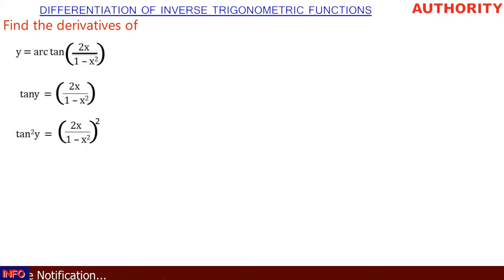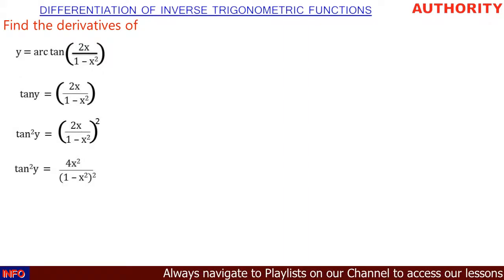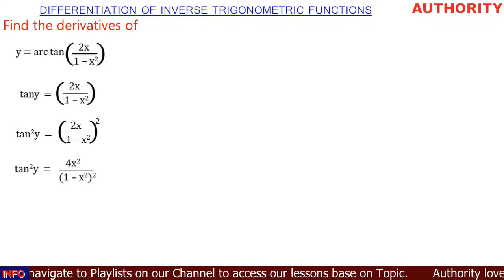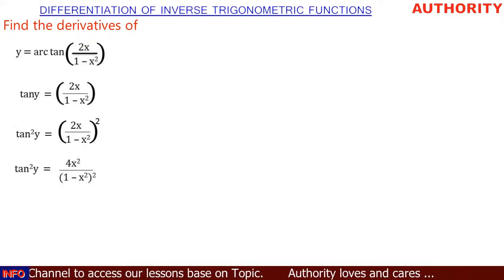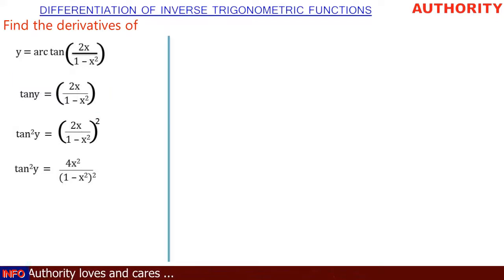Tan squared y is equal to 2x all over 1 minus x squared, all in brackets, squared. If we open this bracket, this square will be distributed to every term in the numerator and denominator. So we're going to have 4x squared all over (1 minus x squared) squared.